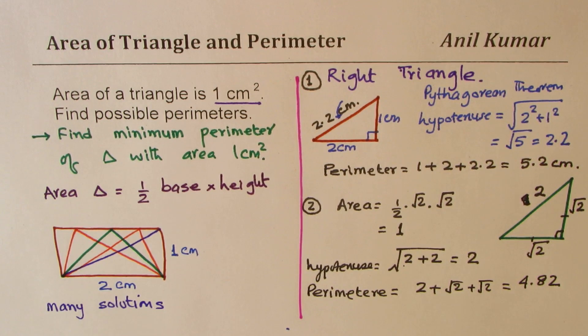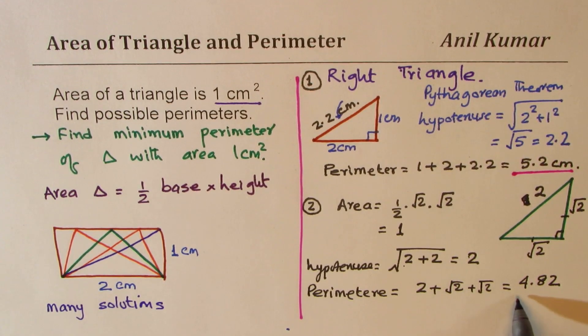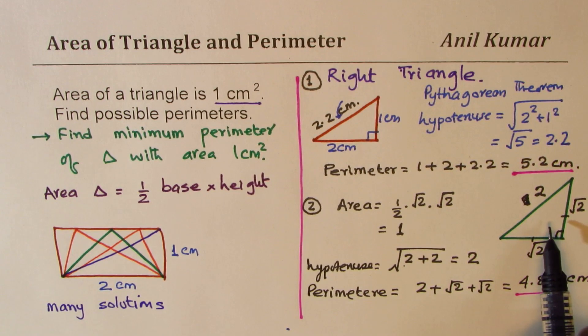If you compare the results which we got earlier, the perimeter earlier was 5.2 centimeters. And now it is 4.8 centimeters. Which one is smaller? So this is much smaller.